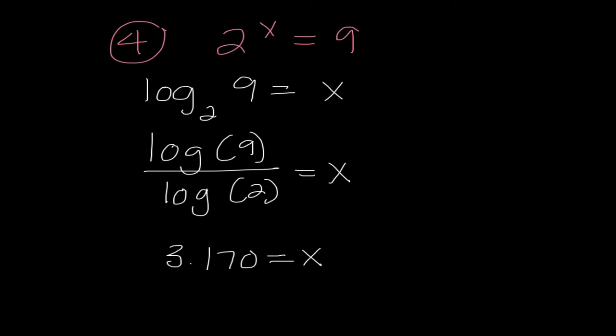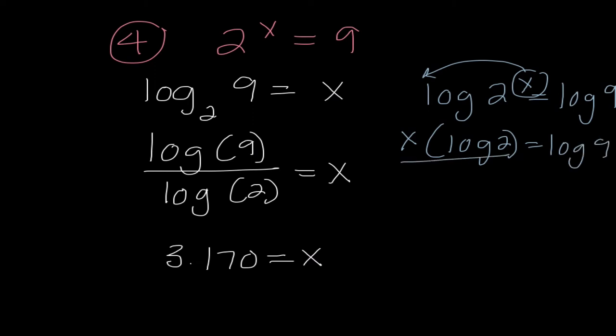If we use the second method, and I'm taking a log of both sides, I would do log of 2 to the X equals log of 9. I know my X goes out in front, so I have X times log of 2 equals log of 9. In order to get X all by itself, I'm going to divide both sides by log of 2. So, I have log of 9 divided by log of 2, which amazingly is the same thing we did over here. And I end up getting X is 3.170.